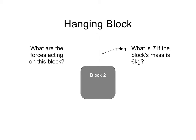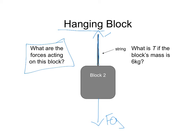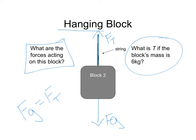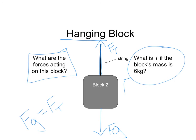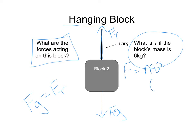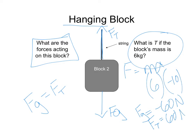What if a box is hanging from a rope? The forces are gravity downward and tension upward. Since the block is hanging and not moving, it's a static balanced situation, meaning the tensional force equals the gravitational force. For a 6 kilogram box: F = ma gives a force due to gravity of negative 60 newtons, so the tensional force must be positive 60 newtons.